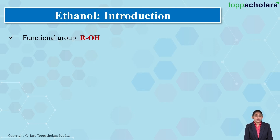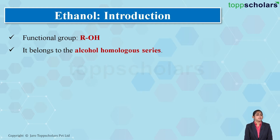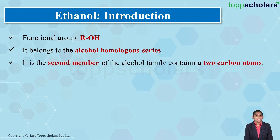ethanol consists of the functional group alcohol, that is ROH, which means that ethanol belongs to the homologous series of alcohol. Now, how many carbon atoms are present in ethanol? Yes — two carbon atoms.